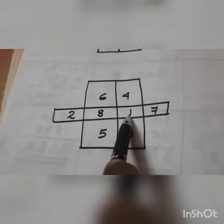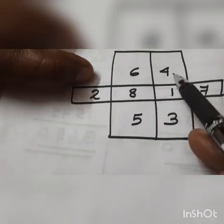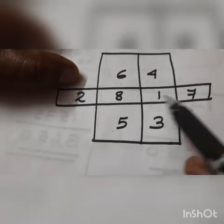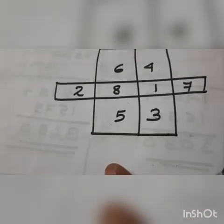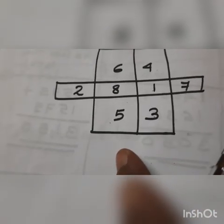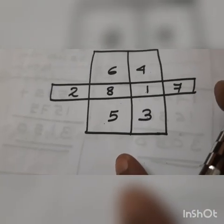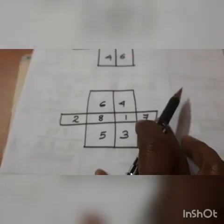Then write 1 here, 2 here, 3, 4, 5, 6, 7, 8 — this is another order. Try to find another method to write these numbers if you can.